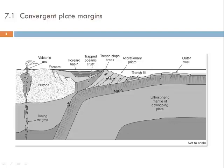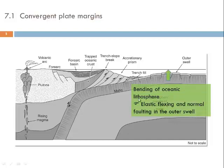Normally we create rocks called tectonic mélange because the strain is very high and material of very different provenance can be juxtaposed very close together. The trench sediments are usually derived from the forearc region and deposited in a deep water environment — the water depth in oceanic trenches can exceed 10 kilometers. Further out we see an area caused by bending of the lithosphere, which is an elastic flexing, and normal faulting in the outer swell will produce horst and graben features related to the flexing and bending of the oceanic lithosphere.